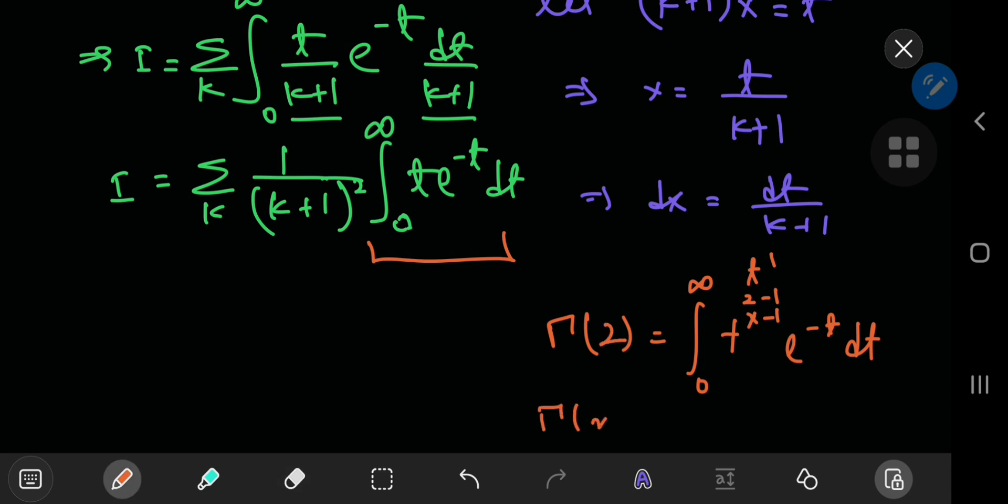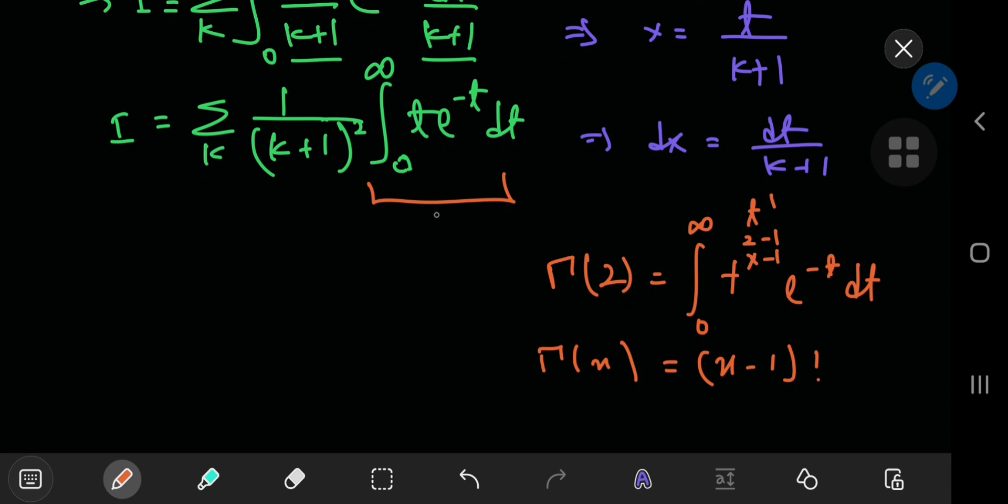Now the gamma function for integers n is quite simple. It reduces to the factorial of the number 1 less than n. So this implies that your integral here is just gamma 2, which is 1 factorial, which is of course 1, which is quite convenient.